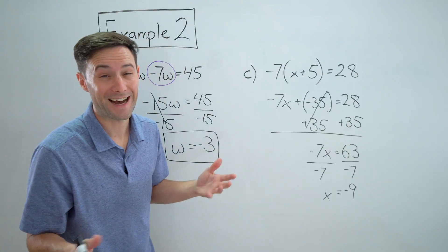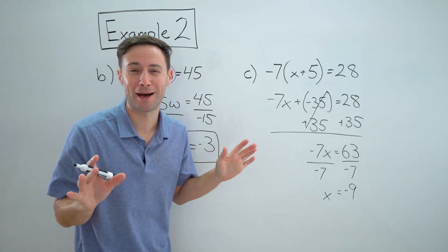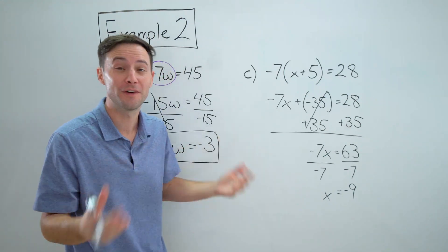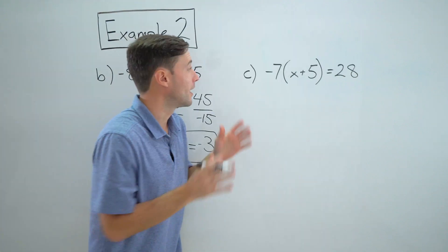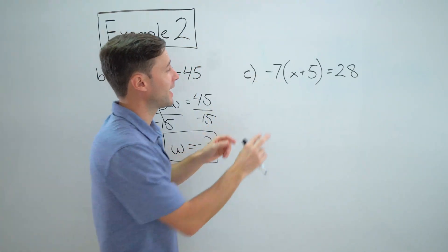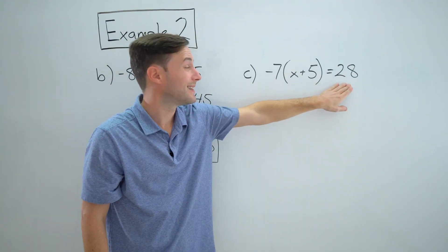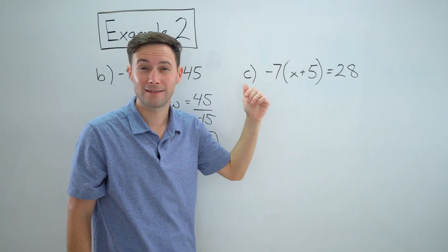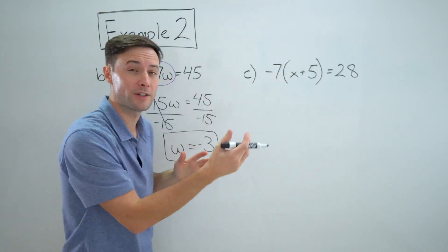But I'm lazy. I really am. I like to do the least amount of work as possible and be as efficient as possible. So let's look at another way to do this. All right. So instead of using the distributive property first, I'm looking at this negative seven and then that 28. 28 is divisible by negative seven, which is fantastic because instead of using the distributive property, I'm going to divide both sides by negative seven first.